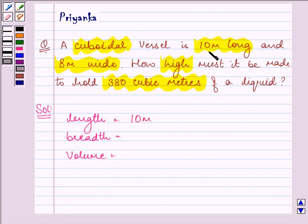Length is given to us as 10 meters, breadth is 8 meters, and the volume is 380 cubic meter, that is meter cube. We need to find the height of this vessel.